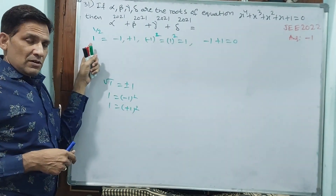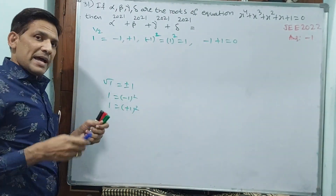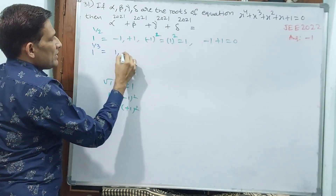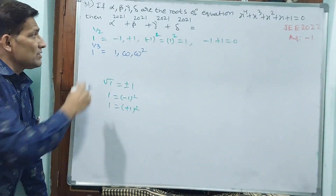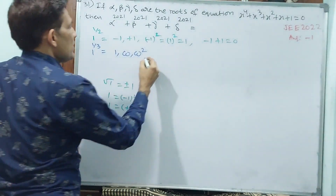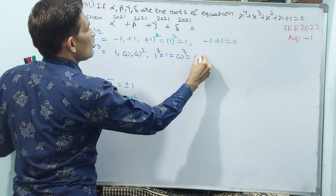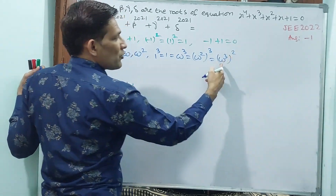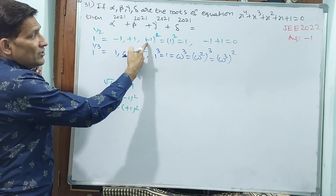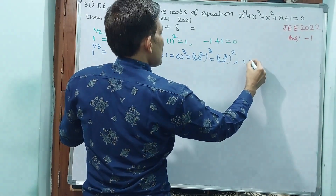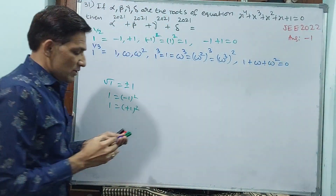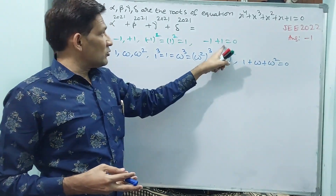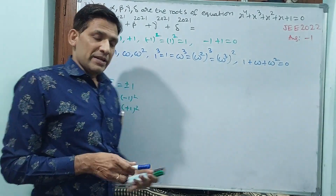For cube root: 1 to the power 1 by 3. The roots are 1, omega, and omega square — these are the three roots. And note: 1 cubed equals 1, omega cubed equals 1, and omega square whole cubed equals 1 as well, since omega square whole cube means omega cube whole square equals 1 squared equals 1. Importantly, 1 plus omega plus omega square equals 0 — if you add all those roots, 0 is going to come.